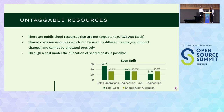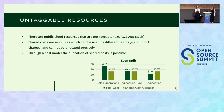We have untaggable resources in the cloud — two different kinds. First, shared costs: these are shared and used by different teams, for example network charges, support charges, or shared storage. Second, public cloud resources that are not taggable at all — most of the time these are special services, like the AWS App Mesh.